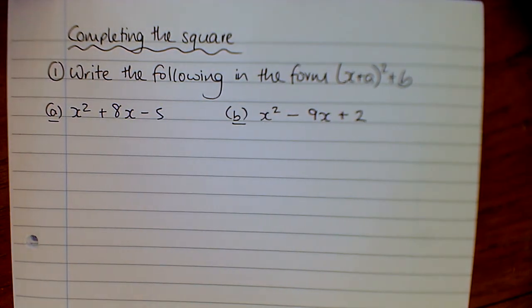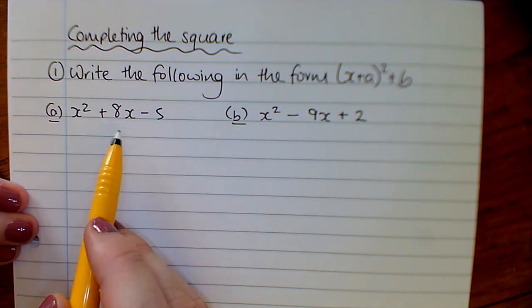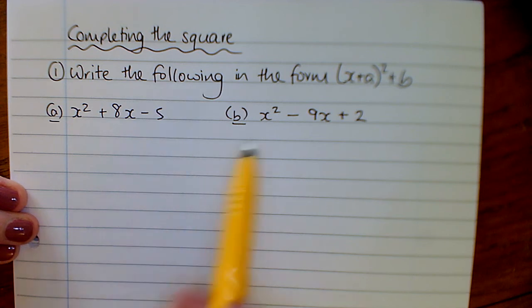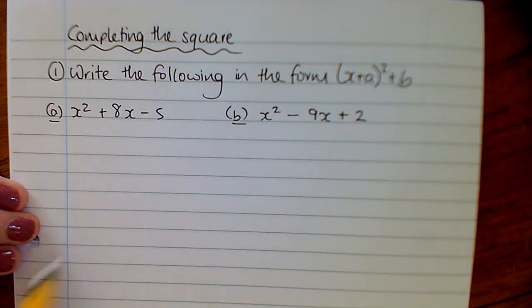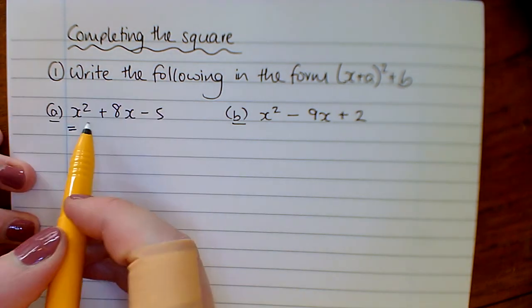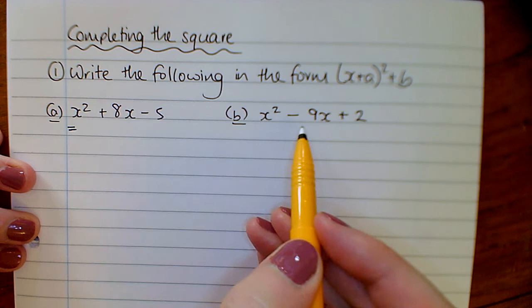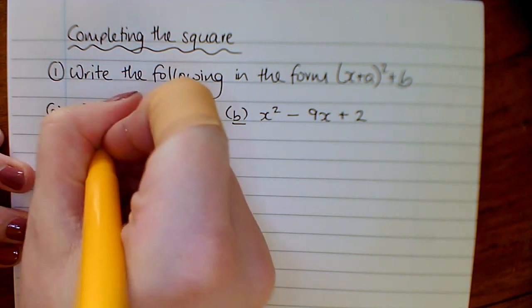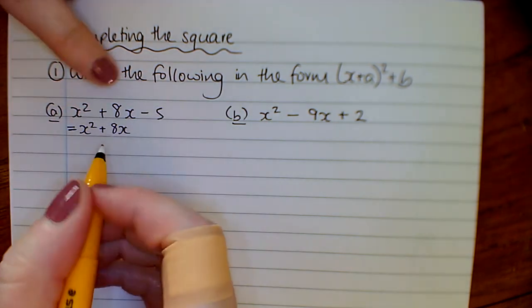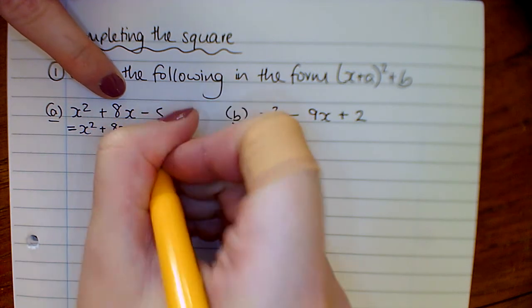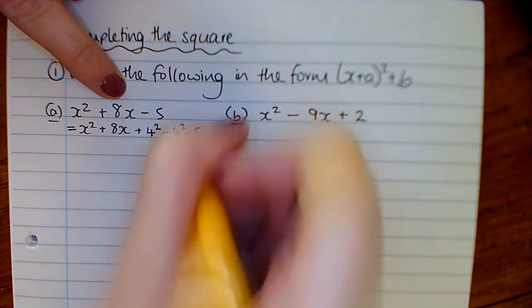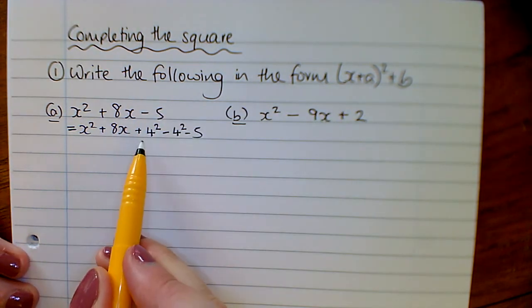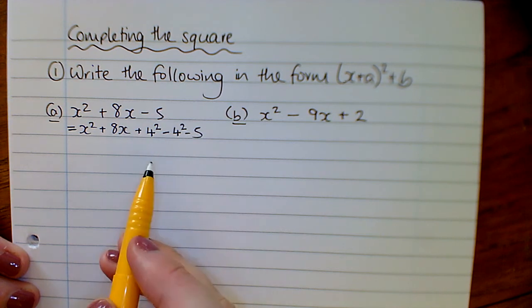Completing the square — sometimes it's useful to write quadratics in a different format. We're used to seeing them as x squared, x, and then a number, but sometimes it's helpful to write it in this format: x plus a number, all squared, plus or minus another number. To do this, we add on half the coefficient — remember, the coefficient is the number in front of a letter — so we add on half the coefficient of x and then take it away again, keeping the equation the same.